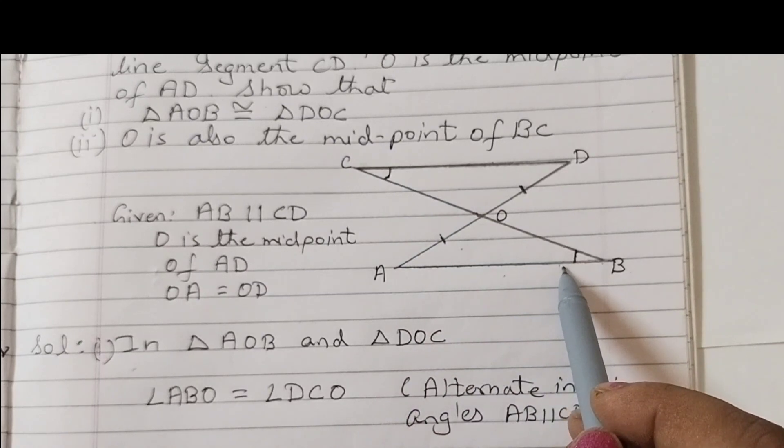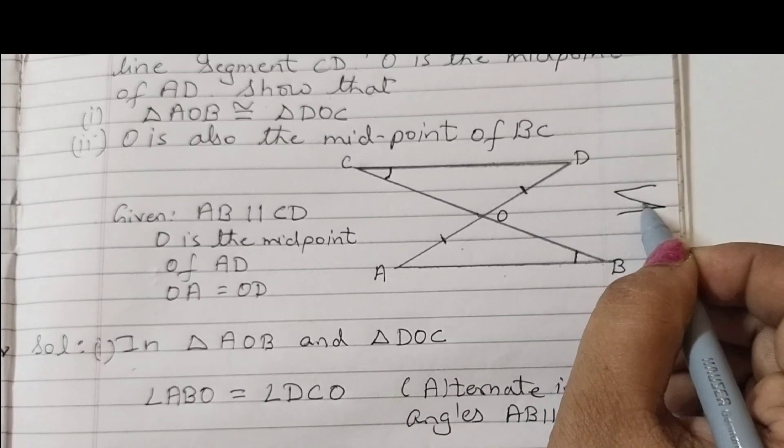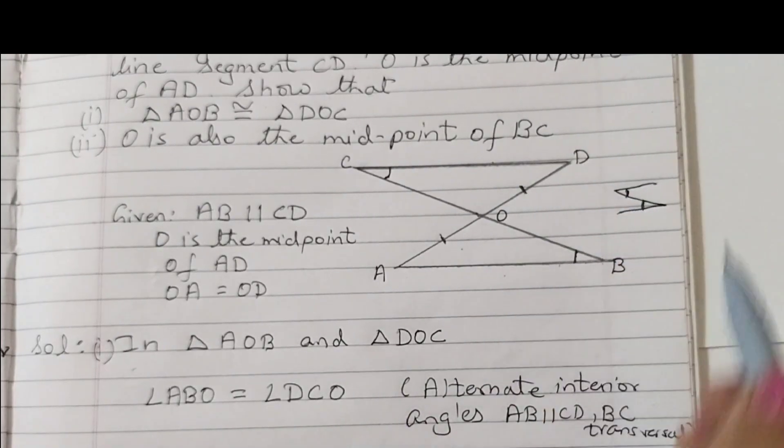These two are equal because these two are parallel. Therefore, these would form alternate interior angles. So these two angles are equal.